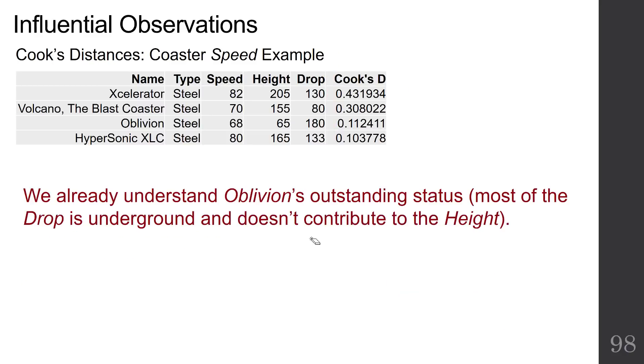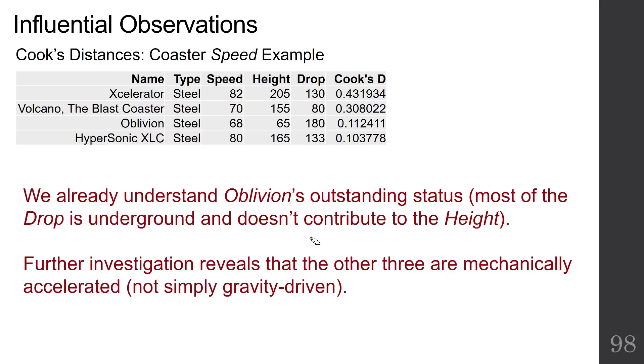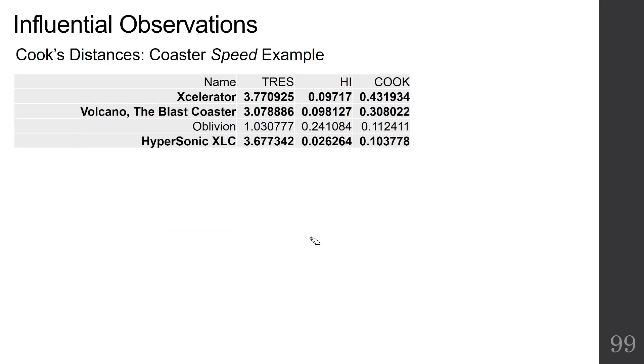We already understand what's going on with Oblivion. We understand that Oblivion's outstanding status is because most of the drop is underground and doesn't contribute to the height. But what about the other three roller coasters? Well, further investigation reveals that the other three are mechanically accelerated - they're not just simply gravity driven. These were the three with the very high studentized residuals, the ones that were mechanically accelerated. Those are the ones with the studentized residuals above three.